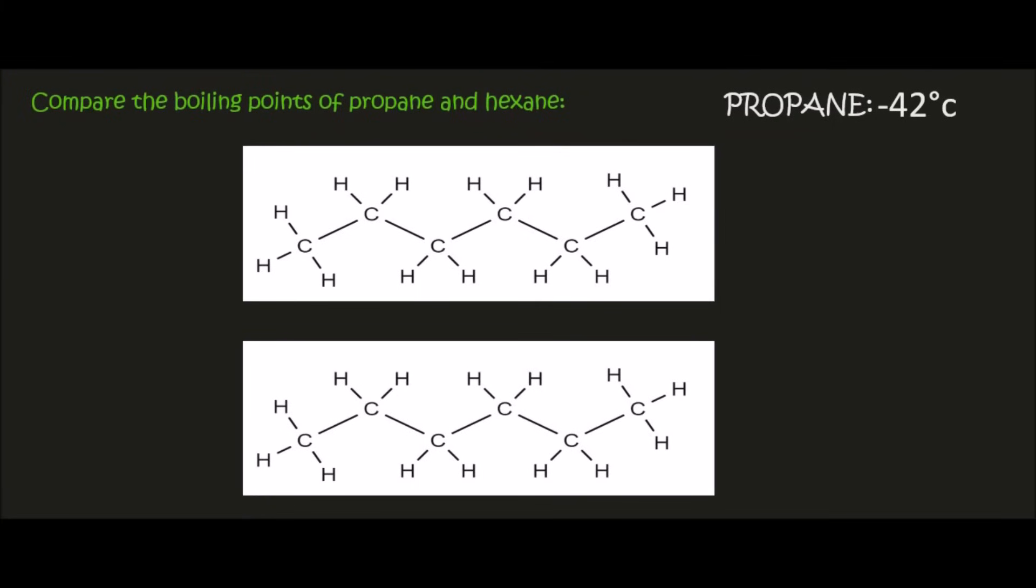Now we're going to look at hexane. So hexane is also an alkane, but it's got six carbons. And so we know that it's non-polar. And so the forces in between are going to be London. But because it's a longer chain, there is more space for London forces to be present.